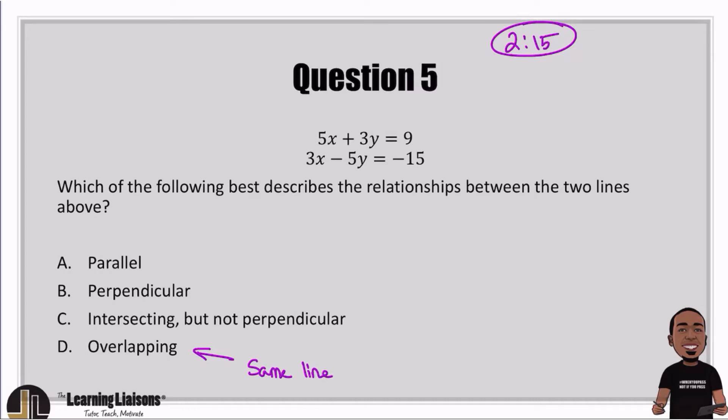Intersecting but not perpendicular just means that they have different slopes. Different slopes that aren't perpendicular. If they were perpendicular, then we would classify it as perpendicular. But if it's not perpendicular and they have different slopes, then we would select C. And then parallel means same slope. And then perpendicular means opposite reciprocal slopes.